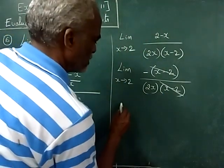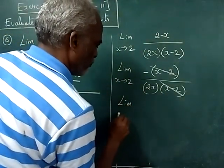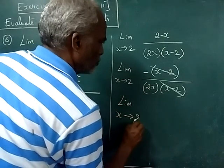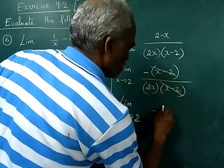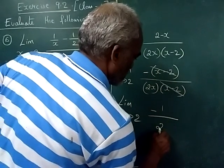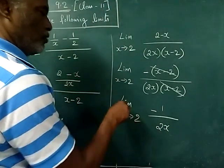So the next step will be limit x tends to 2, minus 1 divided by 2x. Now you apply limits.